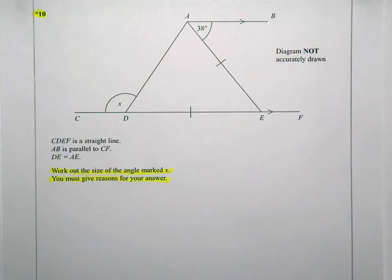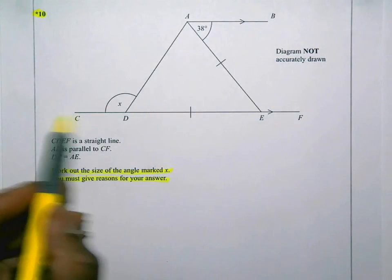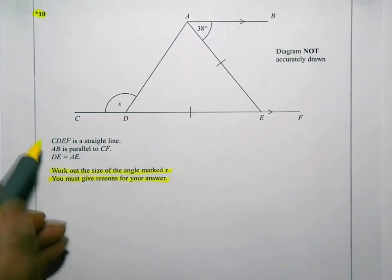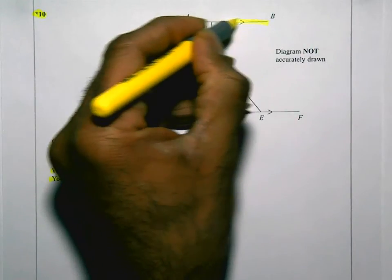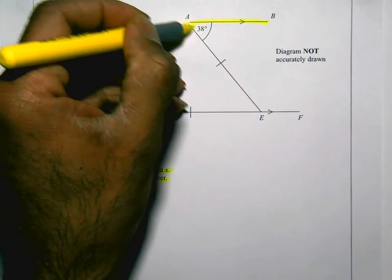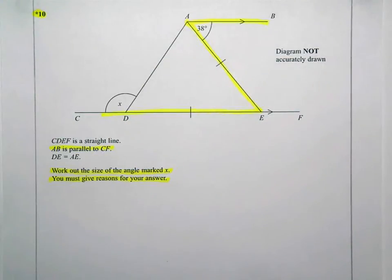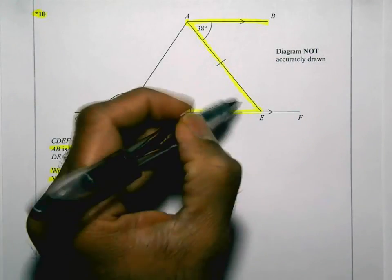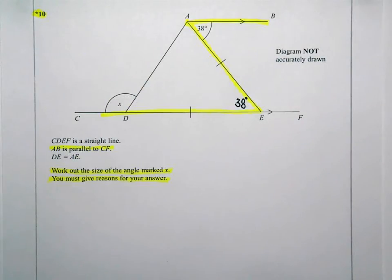Okay, one of the things I'm going to do straight away is, because these two lines AB and CF are parallel, that there forms what we sometimes call a Z angle, or the proper name for it is an alternate angle. So that means that that angle there is also 38 degrees, and the reason for that is because it's an alternate angle.